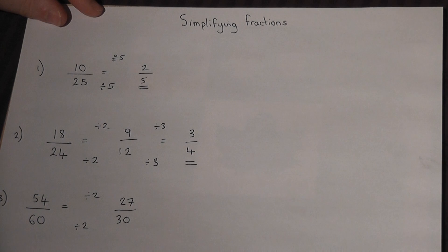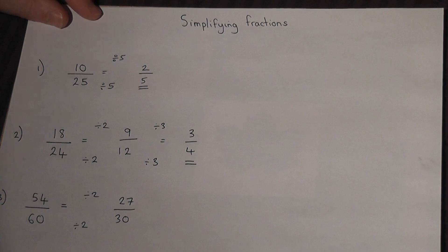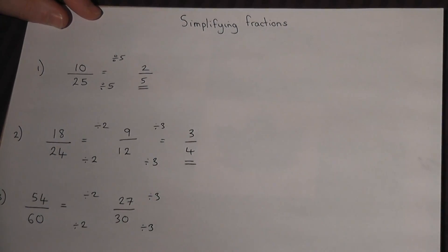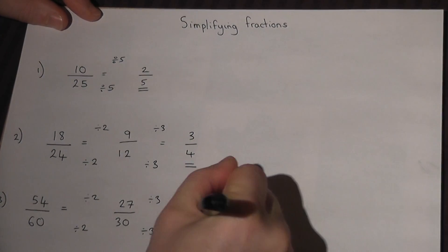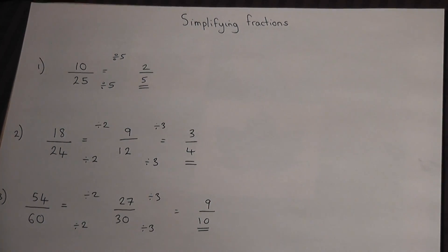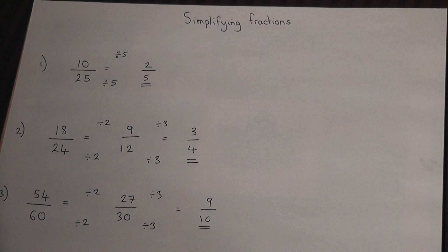I can then spot that they both go in the 3 times table, so I can divide by 3. That gives me 9 over 10. And once again, they only share 1 as a factor, so therefore that is the fraction in its simplest form.